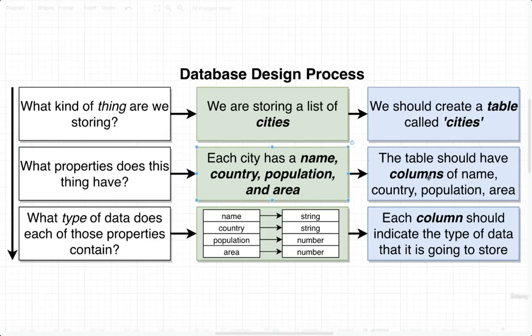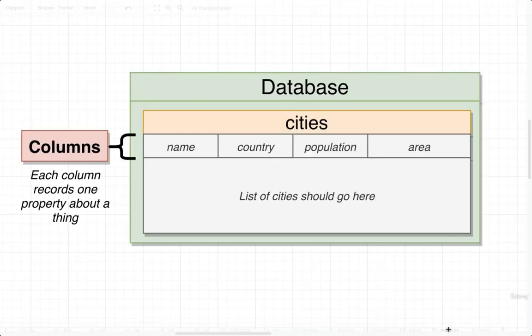From the second answer, we're going to take the different properties that each city has and use them to create columns inside our table. We're going to make sure that our cities table has columns of name, country, population, and area. Inside a table, each column stores information about a very specific property of a record. Because we want to store name, country, population, and area for each city, we make four columns — one for each of those different properties.